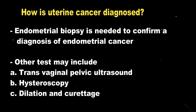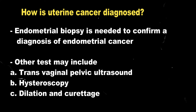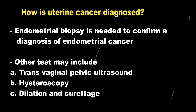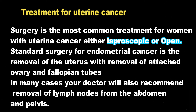Now we will know how we can diagnose uterine cancer. Endometrial biopsy is needed to confirm a diagnosis of endometrial cancer. Other tests that can be done include transvaginal pelvic ultrasound, hysteroscopy, and D&C — dilatation and curettage.